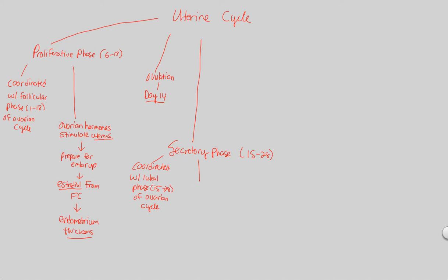Because the luteal phase is occurring, a corpus luteum is going to be producing things. The corpus luteum from the ovarian cycle is producing lots of progesterone and also estradiol. So we have these two hormones being produced by the corpus luteum because the luteal phase is happening. What does this cause for the uterine cycle? This actually causes further development — even more preparation — of the endometrium. The endometrium, which was initially thickening in the proliferative phase, is now developing even more.